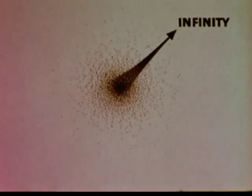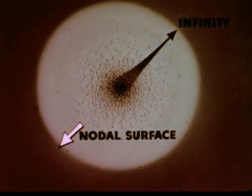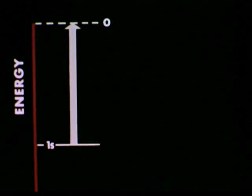Since the 1s orbital is three-dimensional, there is a spherical surface at infinity where the probability of finding the electron is zero. Any surface where the probability is zero is called a nodal surface. The 1s orbital has only one nodal surface. You'll recall that the 1s orbital corresponds to the lowest energy level of the hydrogen atom. The 1s level can be further characterized by the energy needed to pull the electron completely away from the proton. For the first level, this energy is found to be minus 313.6 kilocalories per mole.